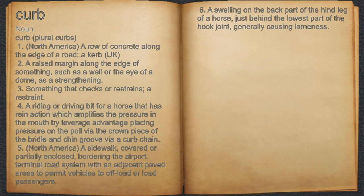Curb. Noun. 1. North America: a row of concrete along the edge of a road. A curb. UK: kerb.